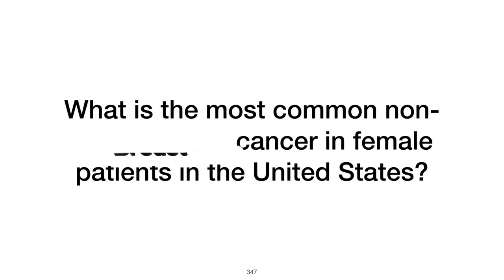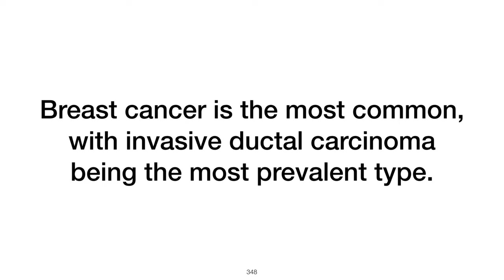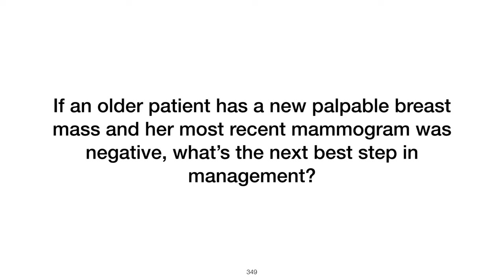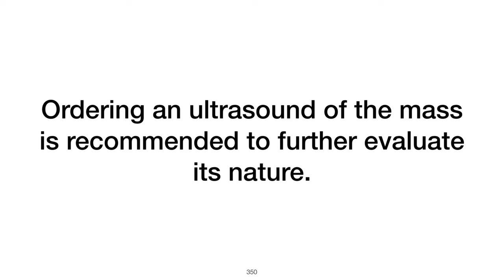What is the most common type of breast cancer? The most common type is invasive ductal carcinoma, which originates in the ducts of the breast and has the potential to spread to other parts of the body. Risk factors for breast cancer include a family history, genetic mutations such as BRCA1 and BRCA2, early menarche, late menopause, nulliparity, postmenopausal obesity, and exposure to estrogen through hormone replacement therapy or oral contraceptives.